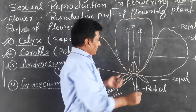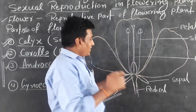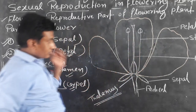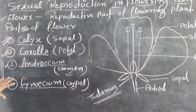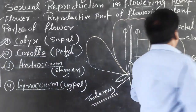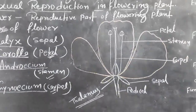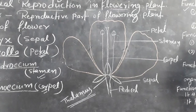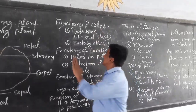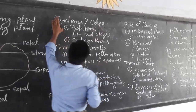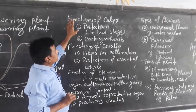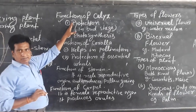The fourth whorl is called gynoecium. Its unit is called carpel. It is situated in the center of the flower. Now let us look at the structure and function of different parts of the flower. The first part, calyx, is green in color, and its main function is protection.